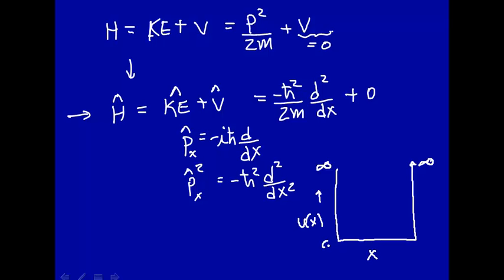So the potential is zero everywhere inside the box, and it's infinite outside the box. This infinite potential out here, infinite potential out there. So that means we have the particle in this box with infinite potential.